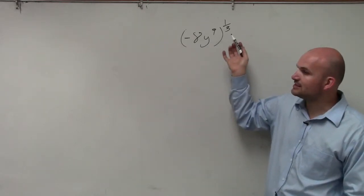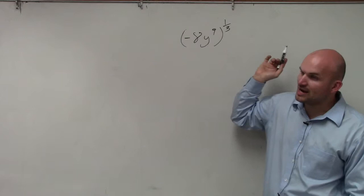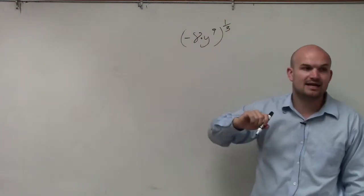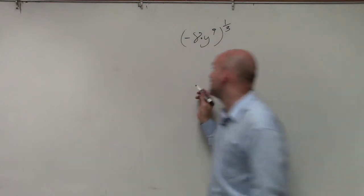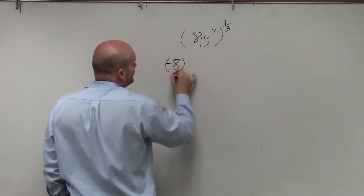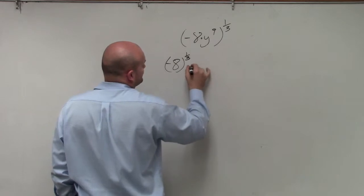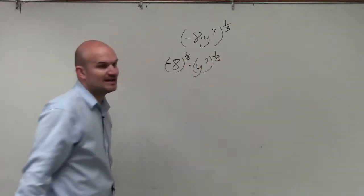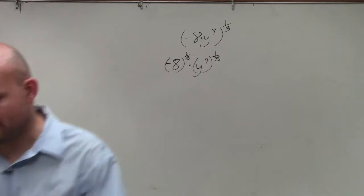The first rule of exponent here is this is the power to product rule. So when you have a product, negative 8 times y to the 9th, raised to a power, that power gets distributed to both of your terms in the product. That is one of your rules of exponents we've gone over in the class. So make sure you remember that.